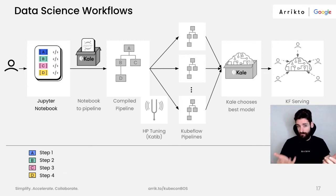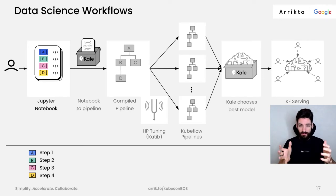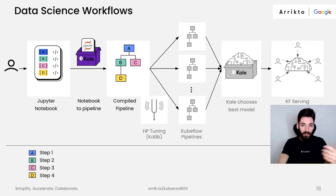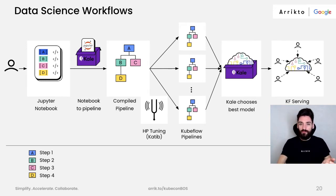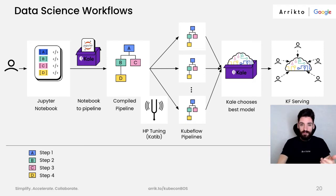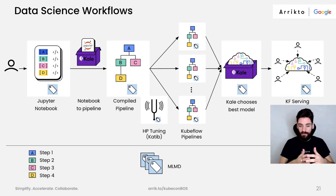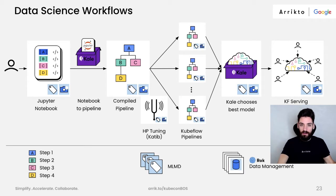The end user starts from a Jupyter Notebook — a local environment where you develop your models or training algorithms. Once you're done, you use Kale to annotate notebook cells and convert the notebook into a scalable pipeline. Afterwards, you can spin up a hyperparameter tuning job to run hundreds or thousands of parallel pipelines. Once that's done, you use Kale again to select the best model and serve it with a convenient API. Each step is tracked by MLMD for end-to-end lineage, and each step is backed by PVCs — Rock takes snapshots of these PVCs to give you a complete time machine of your workflow.